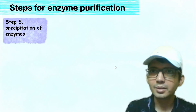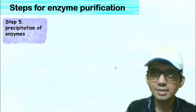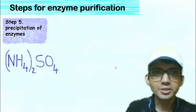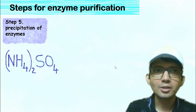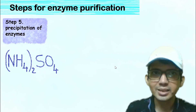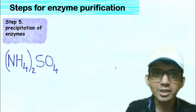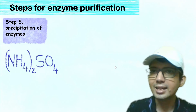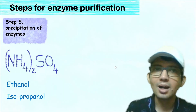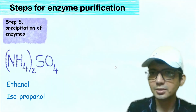The fifth step is precipitation of the enzyme. For this purpose, salts like ammonium sulphate and solvents like ethanol and isopropyl alcohol are widely used.